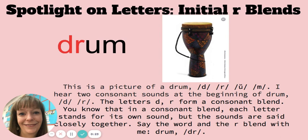I hear two consonant sounds at the beginning of drum: D, R. The letters D, R form a consonant blend. You know that in a consonant blend, each letter stands for its own sound, but the sounds are said closely together.